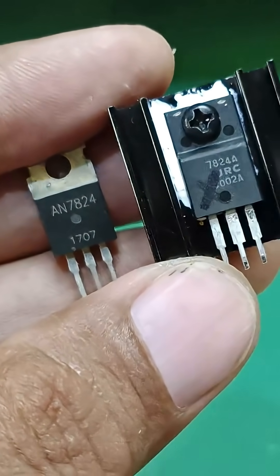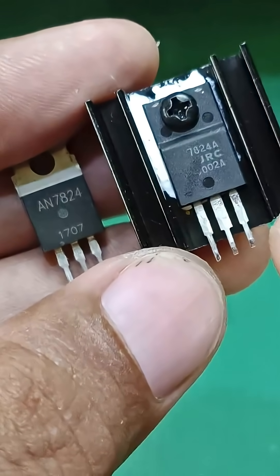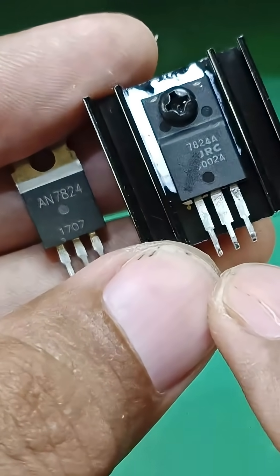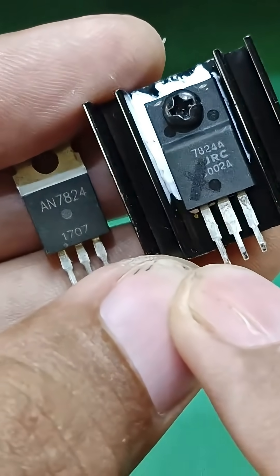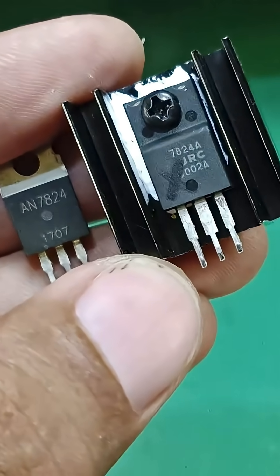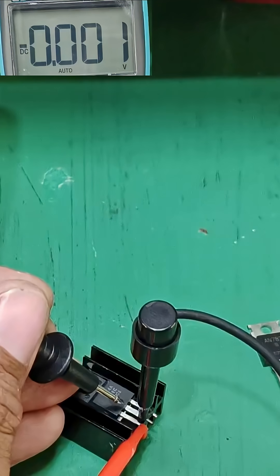Now let's check first this 7824 regulator IC. The pin configuration is: input positive, ground negative, output positive. I'm going to connect here 36 volts and we expect the output more or less 24 volts.